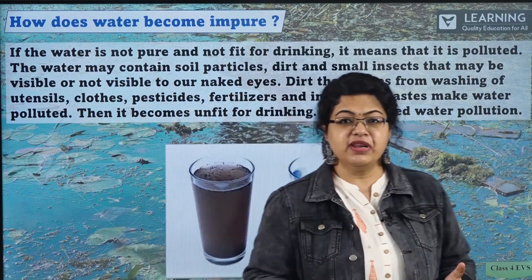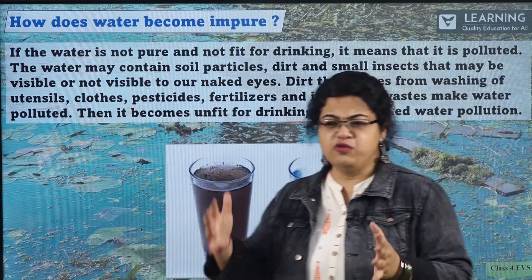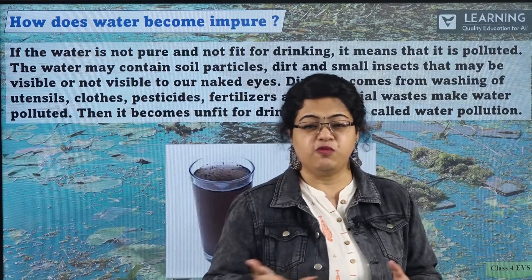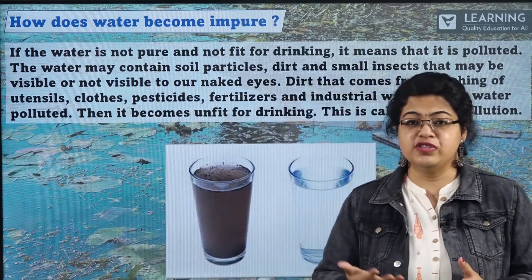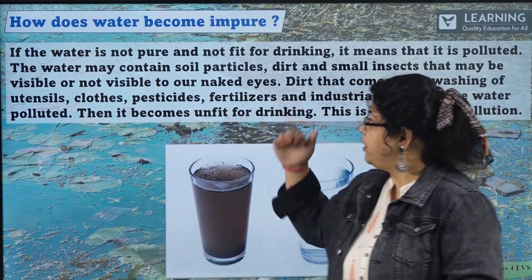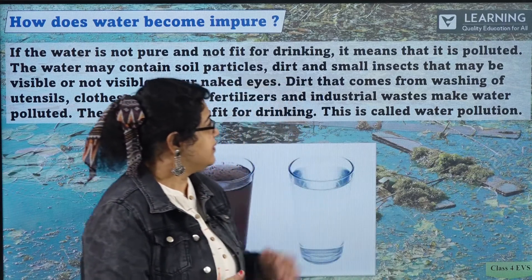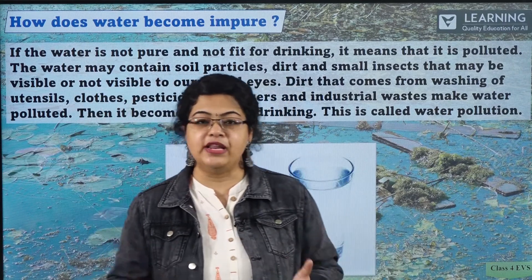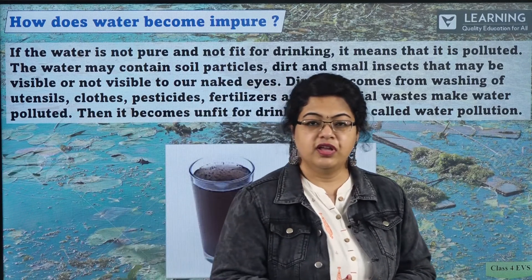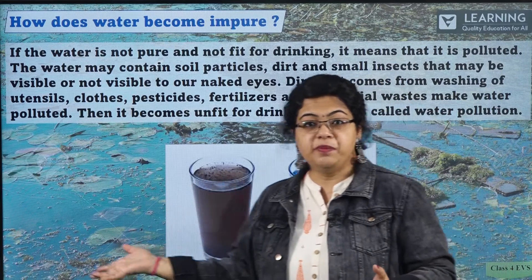Contaminated water is mostly found in drains. It is the wastage water, the waste water that we give out from the kitchen and from the washroom. So water that is not pure and not fit for drinking means it is polluted. There are many kinds of pollution — noise pollution, air pollution, water pollution.